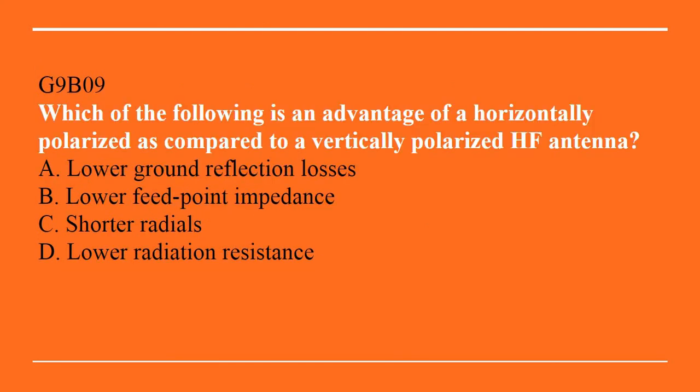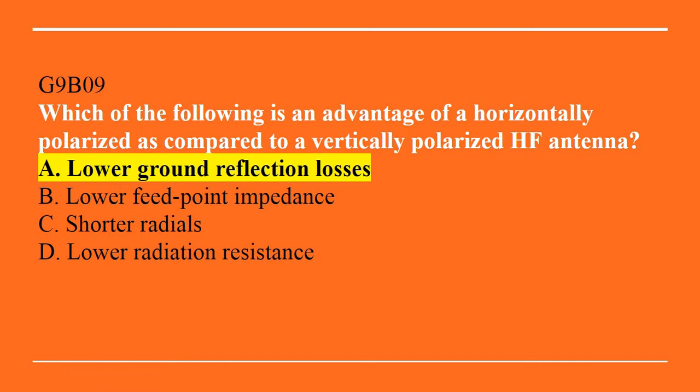G9B09: Which of the following is an advantage of a horizontally polarized as compared to a vertically polarized HF antenna? A. Lower ground reflection losses. B. Lower feed point impedance. C. Shorter radials. Or D. Lower radiation resistance. The answer is A, lower ground reflection losses.